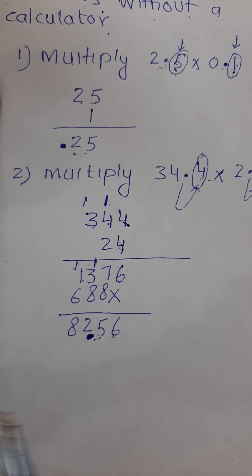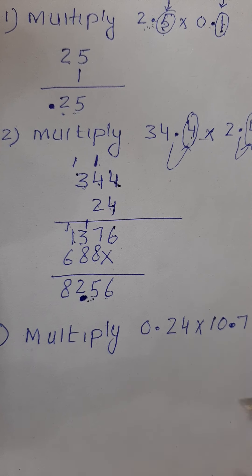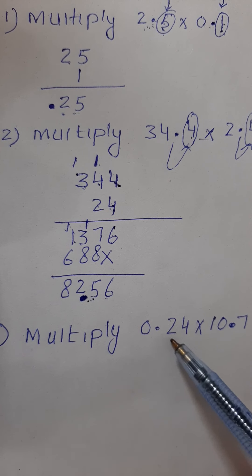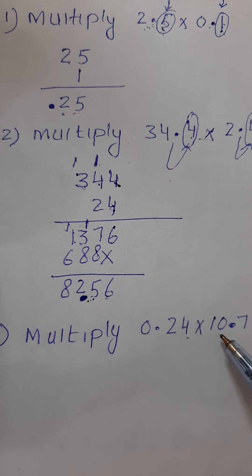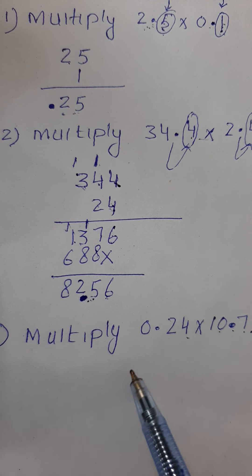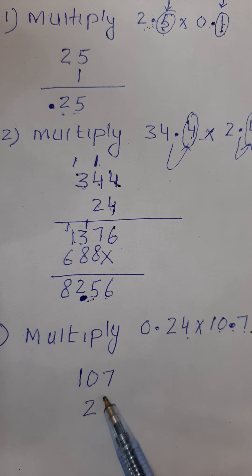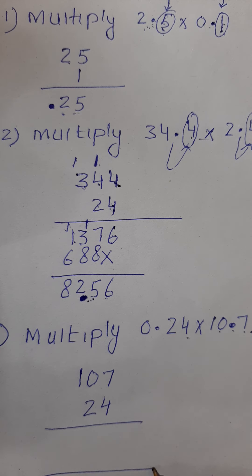Now consider another question: multiply 0.24 and 10.7. First of all, write the numbers without decimals and multiply them.